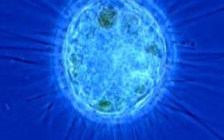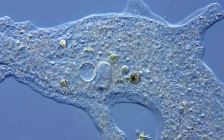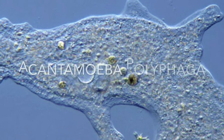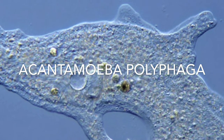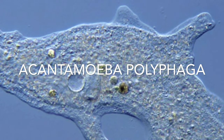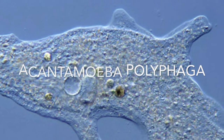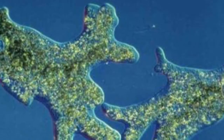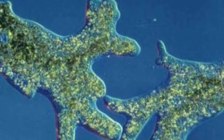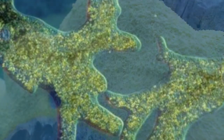Protists were probably the first eukaryotes. They are formed when a larger cell engulfs a smaller cell and the smaller cell evolves into a nucleus. Some are able to move using flagella, cilia, and pseudopods. Some make their own food and some absorb nutrients. Some examples are amoeba and slime mold.